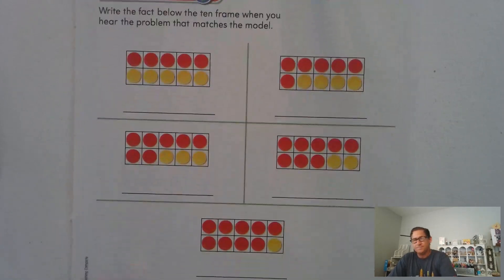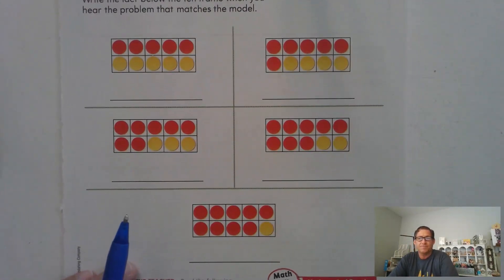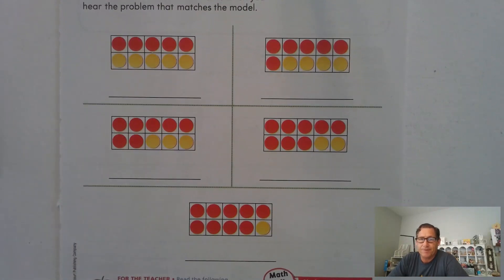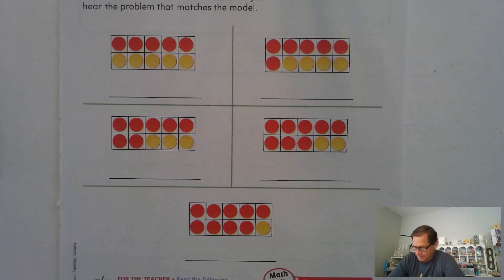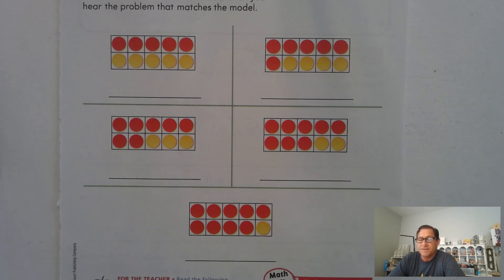Now listen to the following scenario, and I want you to find which of these 10-frames represents the problem I'm reading. There are six large dogs and four small dogs. How many dogs are there? Find the 10-frame that represents the problem I just read, and write the addition problem that it shows. You can pause the video to find your answer.